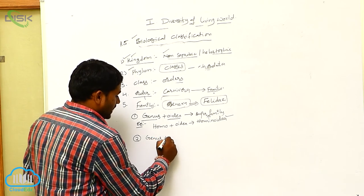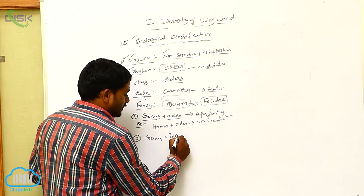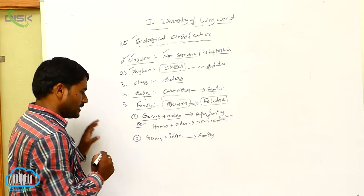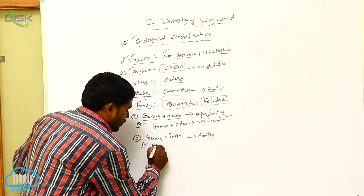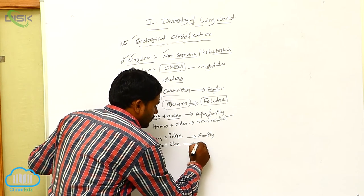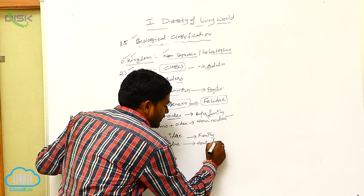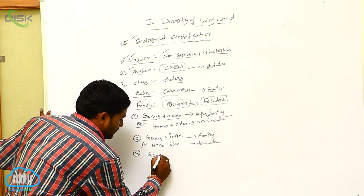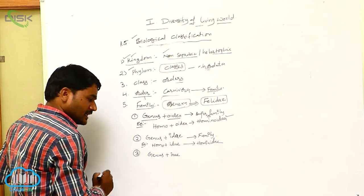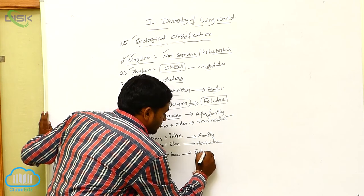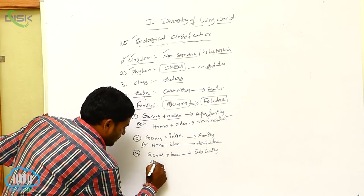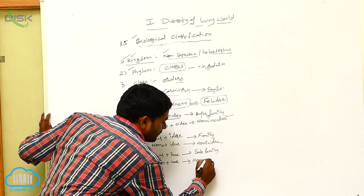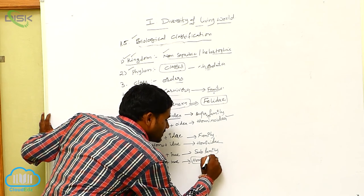Genus plus '-idae' will give you the family. For example, Homo plus '-idae' gives you Hominidae — the family. And if you want to know about sub-family, genus plus the suffix '-inae' will give you the sub-family. For example, Homo is the genus; add the suffix '-inae' and it becomes Homininae — the sub-family of man.